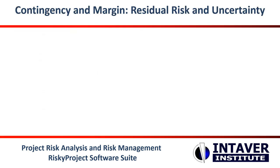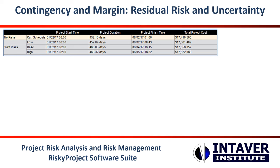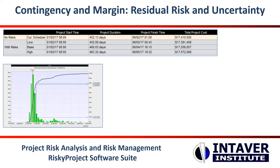Finally, even after mitigation and optimization, what remains is unmanaged or residual risk. To account for this, we run a final simulation to generate a risk-adjusted cost contingency and schedule margin based on the project risk tolerance. These are the buffers that will protect your project delivery dates and budget in case risks do materialize during project execution.